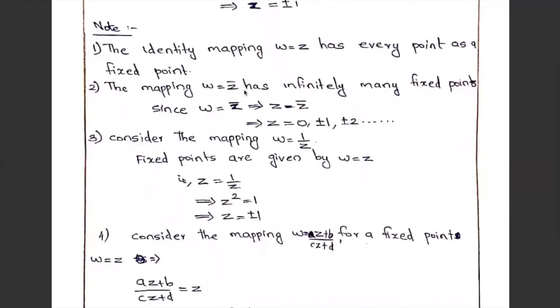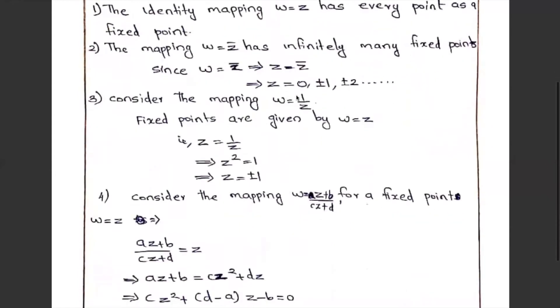The identity mapping w equal to z has every point as a fixed point. w equal to z-bar has infinitely many fixed points; z-bar equal to z implies z equals all real numbers: 0, plus or minus 1, plus or minus 2, etc. For the inverse mapping w equal to 1/z, fixed points satisfy z equal to 1/z, that is z squared equal to 1, giving z equal to plus or minus 1.